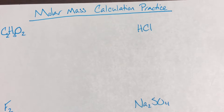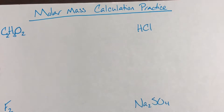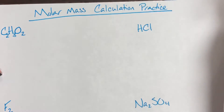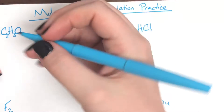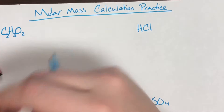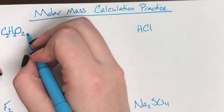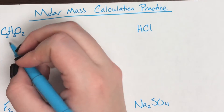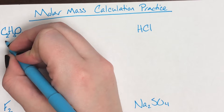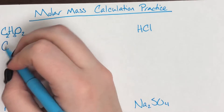We're going to practice calculating molar mass. Here we have some actual examples of molar mass problems. The very first problem we're going to do involves C2H3O2. The very first step is to list out the actual elements that are involved in the compound.